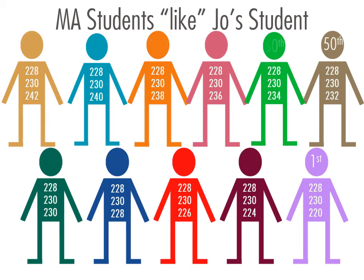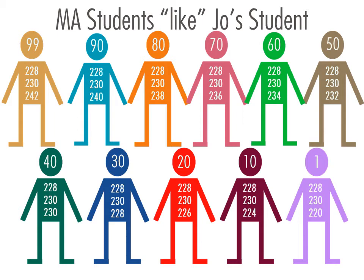The percentile score becomes each student's SGP score. Note that students whose scores went down also have a growth score. The student whose score went down by 4 points has an SGP of 20, meaning that the scores of 20 percent of the students in this test score cohort declined as much or more than did this student's score.